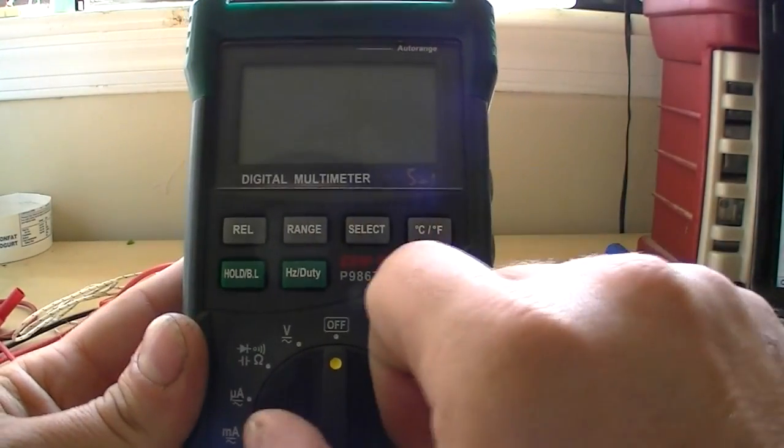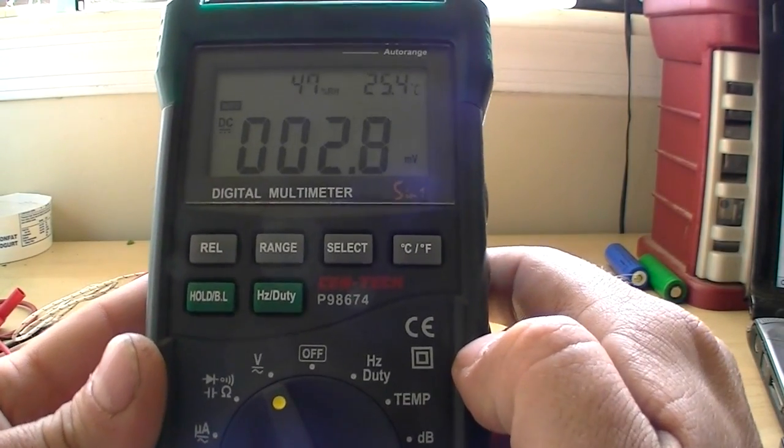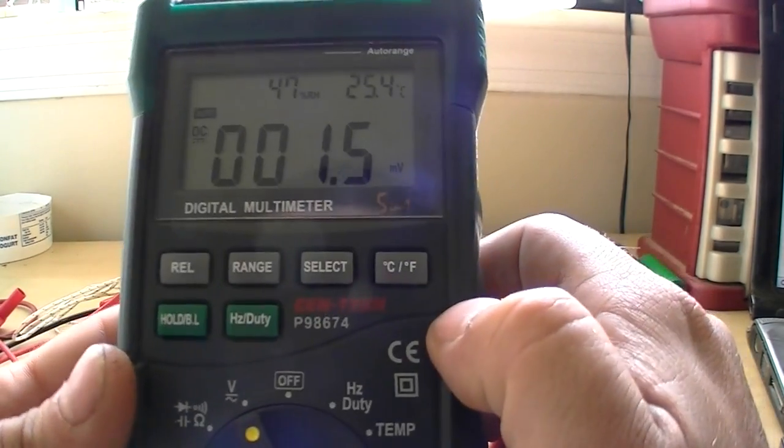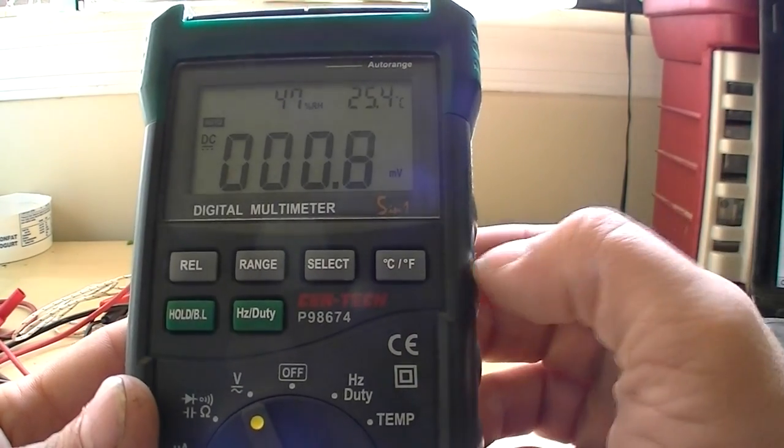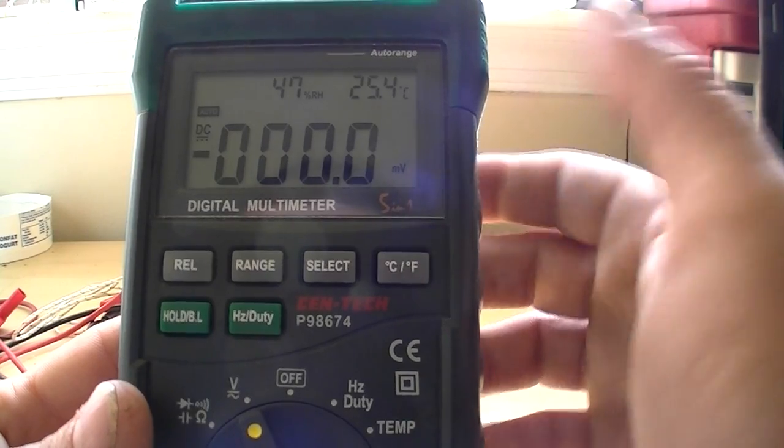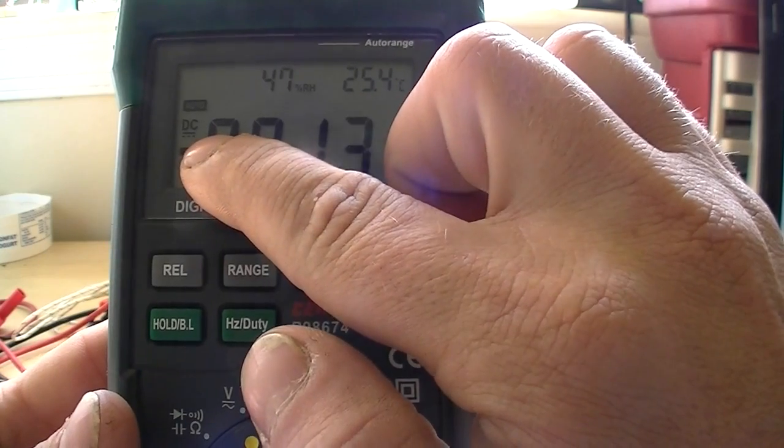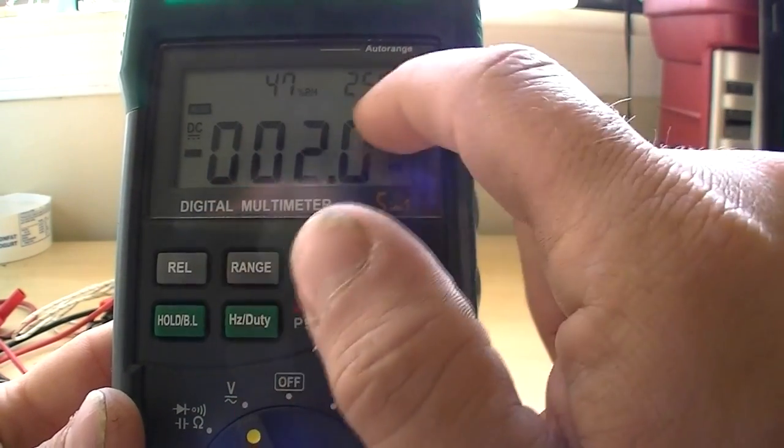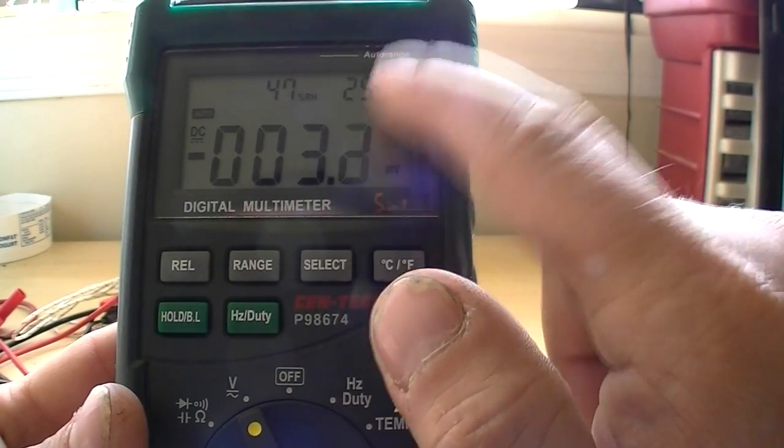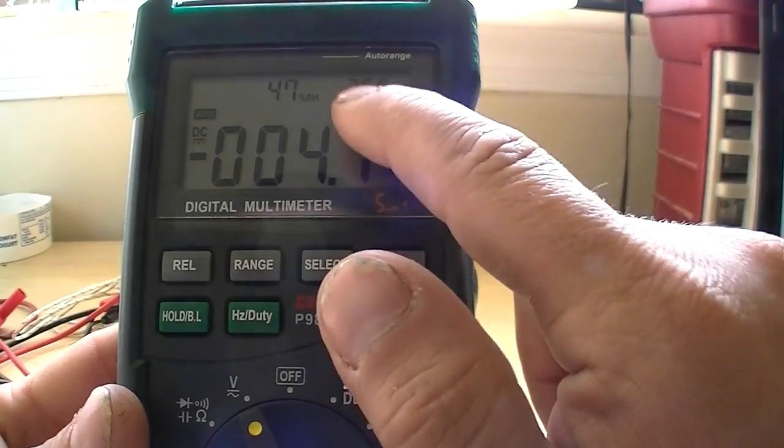Now if we turn the meter on, you can see how big and actually how clear the screen is. When you first turn it on such as on to the voltage setting, you'll get the random searching because we're not plugged into anything right now. It is an auto-ranging meter so it's currently at millivolts showing you that we're reading DC voltage and it's on auto-ranging.